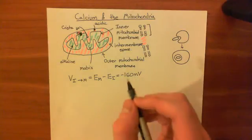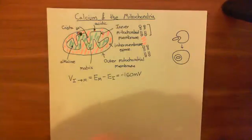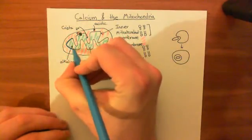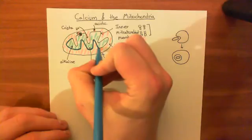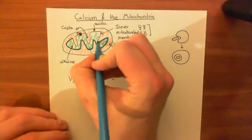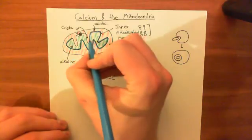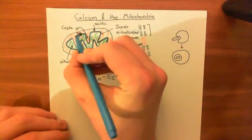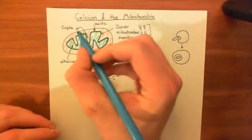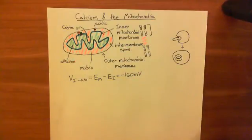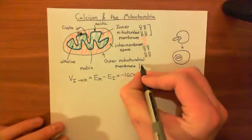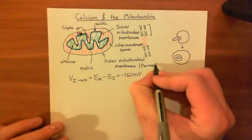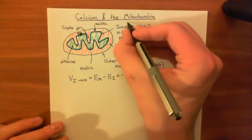Another important point: this inner mitochondrial membrane is extremely tight — it is not very permeable. It does not allow things to just pass through it. That's very important because the protons need to remain in the intermembrane space and can only get back into the matrix by going via the ATP synthase enzyme, thereby driving the synthesis of ATP. But the outer mitochondrial membrane is quite permeable.